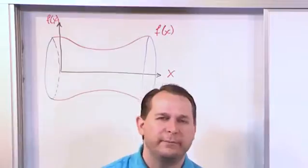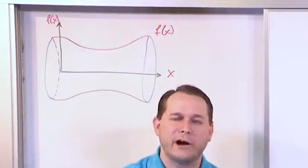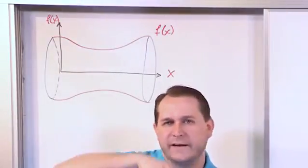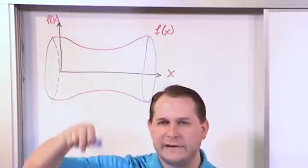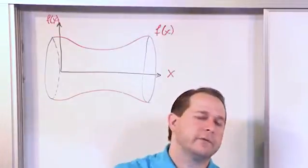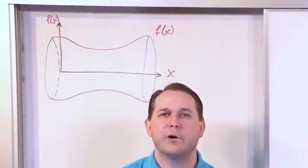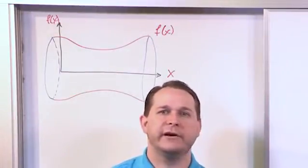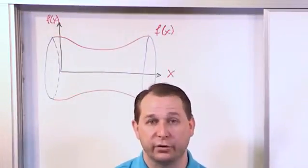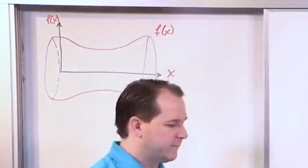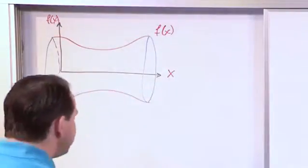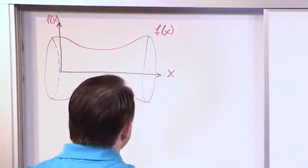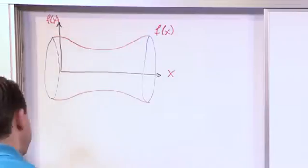And if you think about it, that's always going to be true. No matter how crazy I make f of x — f of x could go up and down, up and down — if I revolve it around the x-axis, I'm always going to have a cross-sectional area that looks like a circle, because I'm revolving it like that. So let's write down a few things about this.